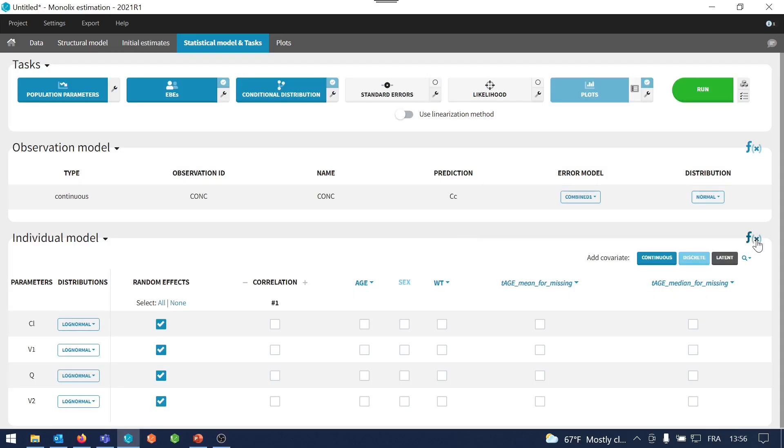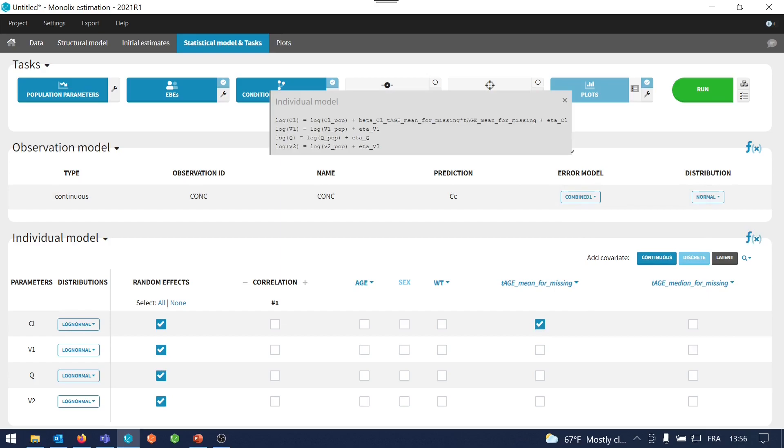Now, what happens if I add a covariate effect of my transformed age on the clearance? As my parameter CL is log normally distributed, I would like to have also a log transformation for age, so that I end up with a typical power-law relationship. Note that usually I can very quickly log transform a covariate by clicking on the covariate Add log transformed. For my transformed covariates that I have just created, this option is not available.